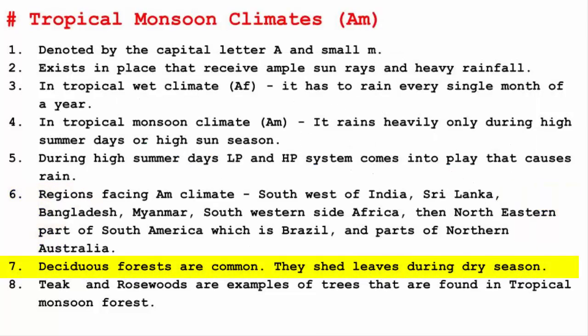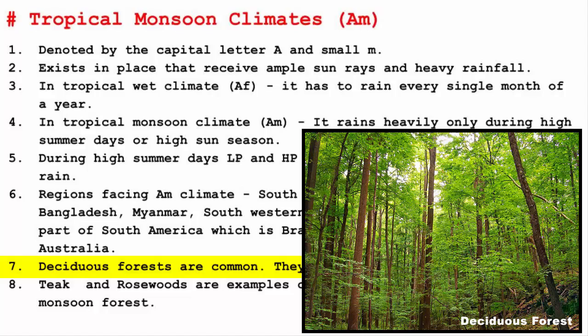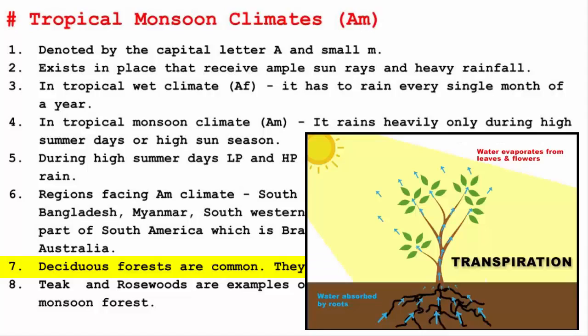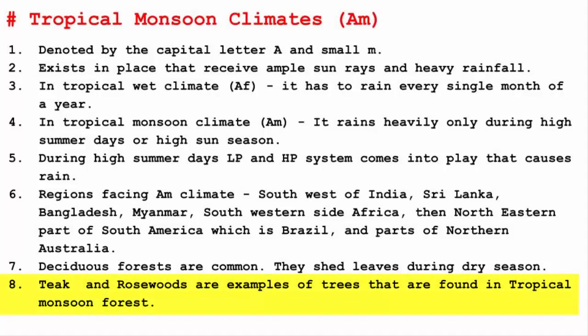Coming to the vegetation part, most of the trees are deciduous trees. That means these trees shed all their leaves during the dry season. The reason trees shed their leaves is to prevent loss of water by transpiration. Teak and rosewoods are examples of trees that are found in Tropical Monsoon Forest.